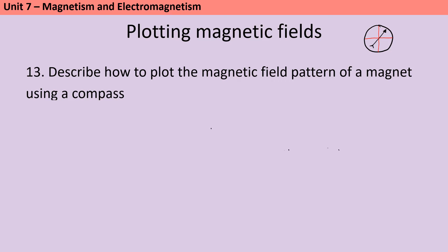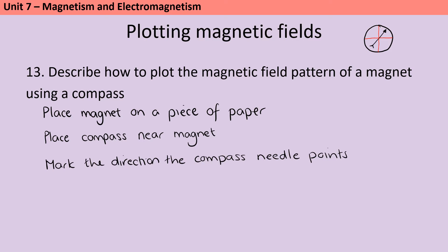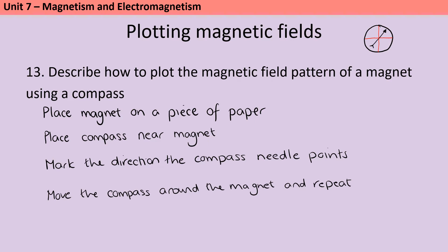The first thing that we need is a piece of paper to put our magnet on, and then we're going to move this plotting compass around the magnet. You place it down close to the magnet, look at the positioning of that arrow, and draw a mark on the piece of paper to show where the arrow was pointing. Then you move the plotting compass around the magnet, each time writing down which direction the arrow was pointing. Then you join together all of those arrows and add arrows that go from north to south to show which direction the field lines were going.